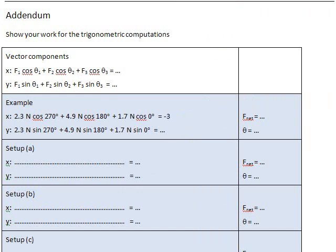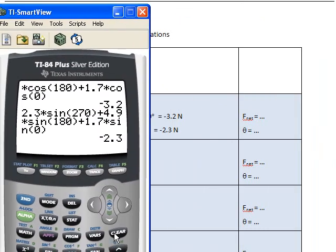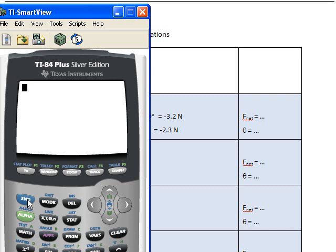Negative 3.2 newtons and negative 2.3 newtons. In order to figure out what the net force is, I have to use the Pythagorean. So I'm going to do the square root of negative 3.2 squared plus negative 2.3 squared. Close the parentheses for the square root. And I come up with 3.9 newtons. Of course, that's exactly the same number that the applet gave me.